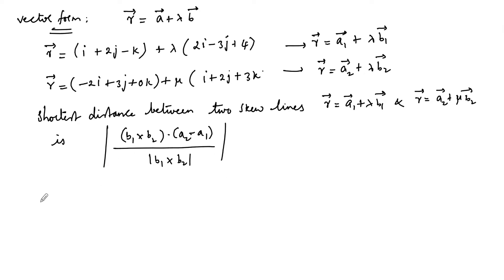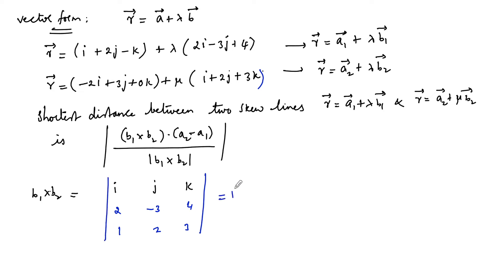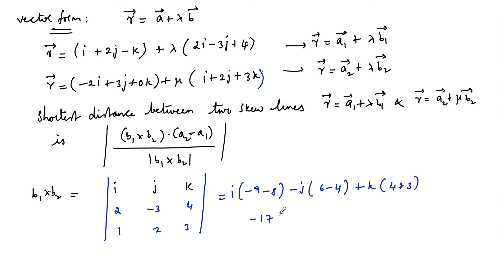b₁ × b₂ is computed using the determinant with i, j, k in the first row; scalar components of b₁ are (2, −3, 4) in the second row; and scalar components of b₂ are (1, 2, 3) in the third row. This gives i(−9 − 8) − j(6 − 4) + k(4 + 3), which equals −17i − 2j + 7k.